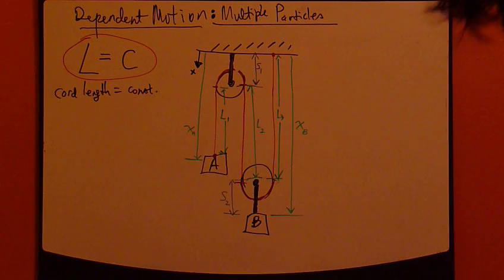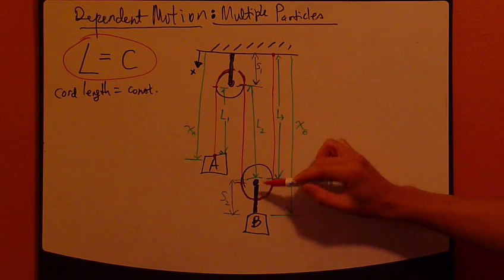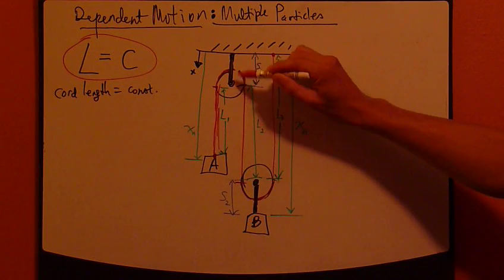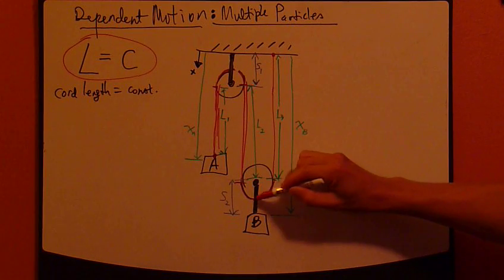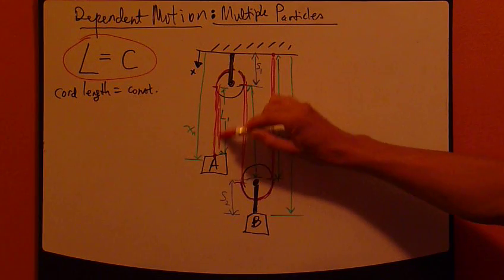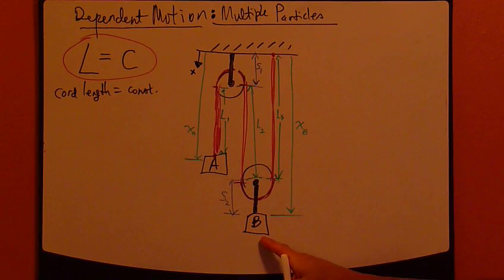For example, this picture right here. Now, we have two pulleys right here. And then this red is the chord, the piece of string, a single piece of chord. Now, we have two particles, particle A and particle B.